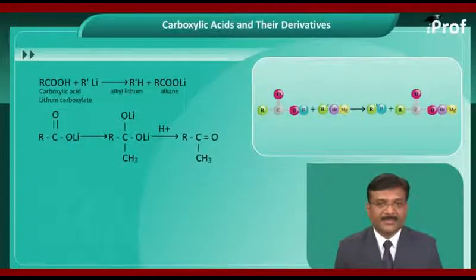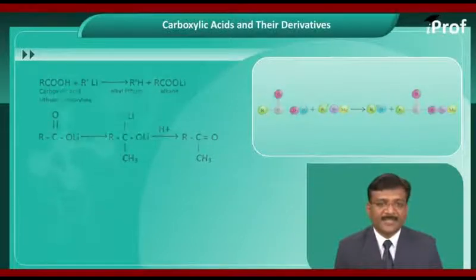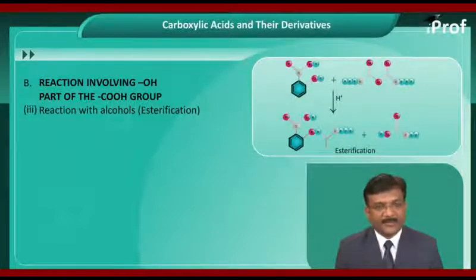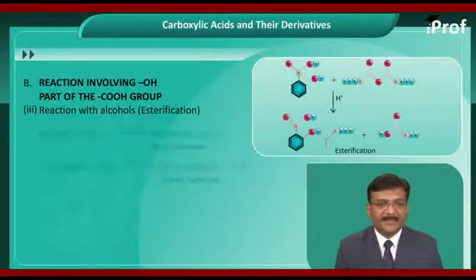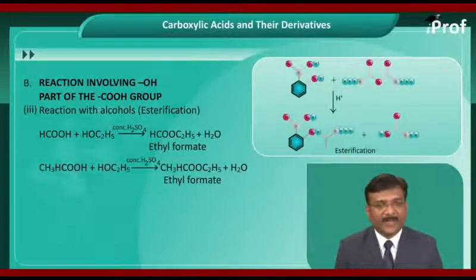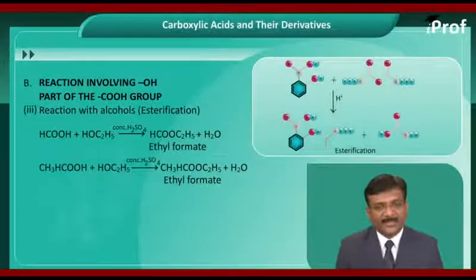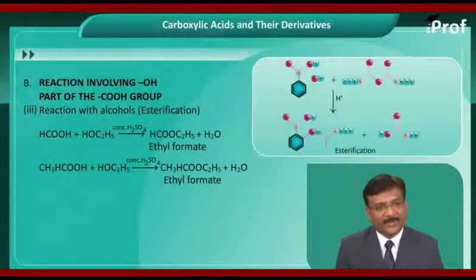The next type of reactions of carboxylic acids involve the OH group of the COOH group, that is the hydroxyl group of the carboxylic group. Here we will study the reaction of carboxylic acid with alcohols. The process is called esterification. Whenever carboxylic acids are treated with alcohols in the presence of concentrated sulphuric acid, corresponding esters are formed along with water molecules.